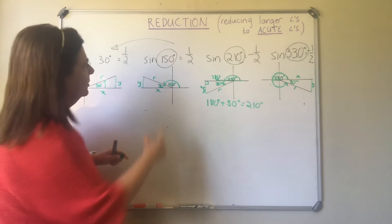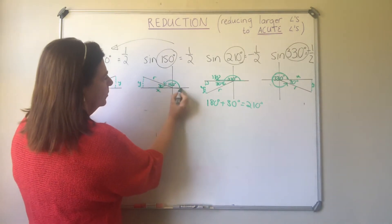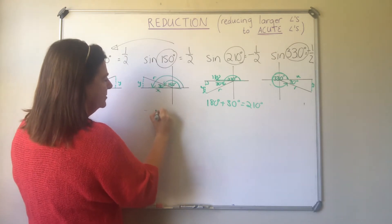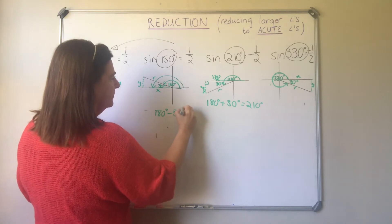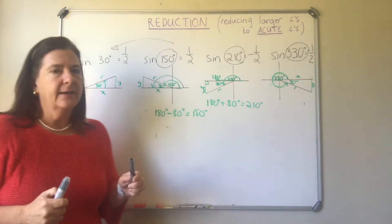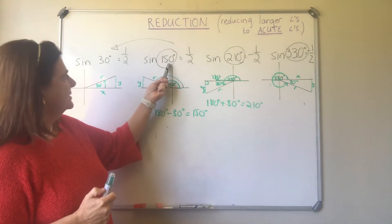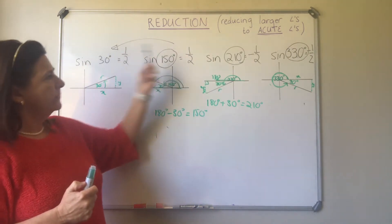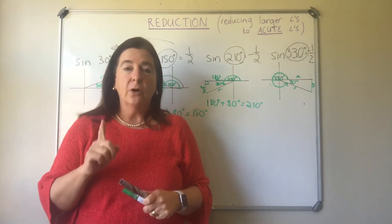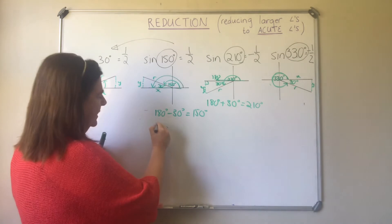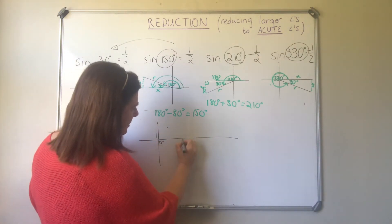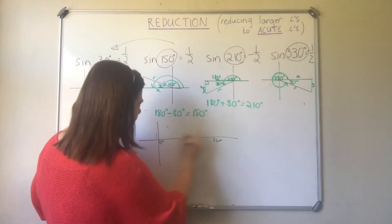We can also write 150° in terms of 30°: all the way around to 180°, minus 30° gives 150°. So in each case this large angle reduced to sine of 30°. Now let's see how it ties up with the actual graph of sine. I'll draw the basic sine graph for 0° to 360°.